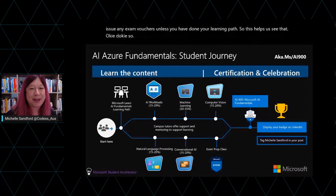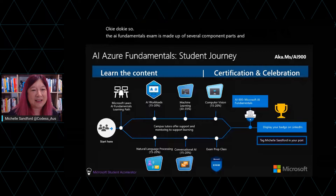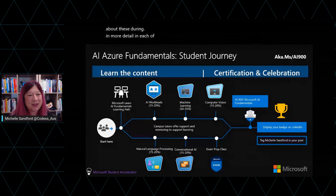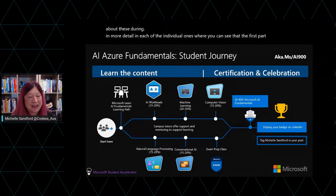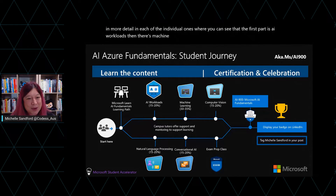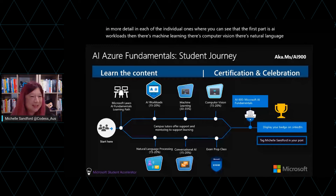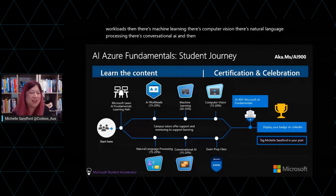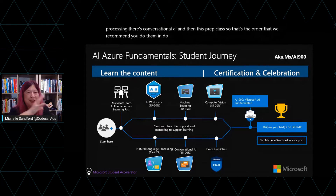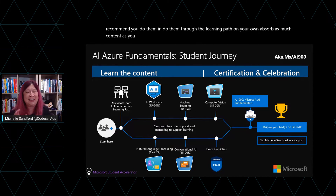The AI Fundamentals exam is made up of several component parts. The first part is AI workloads, then there's machine learning, computer vision, natural language processing, and conversational AI. That's the order we recommend you do them in — go through the learning path on your own, absorb as much content as you can, then do this prep class, and then you'll be ready for your exam.